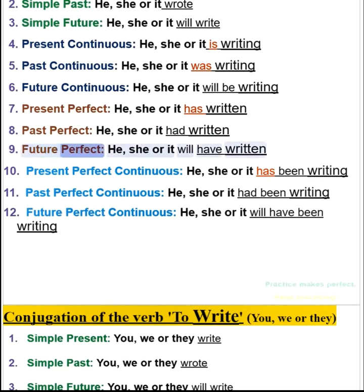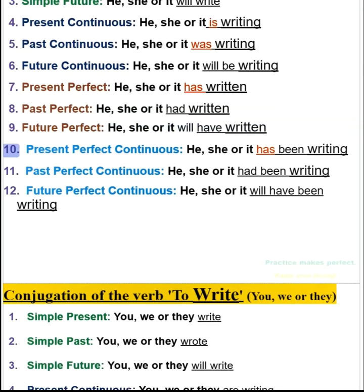8. Past perfect: he, she or it had written. 9. Future perfect: he, she or it will have written. 10. Present perfect continuous: he, she or it has been writing.